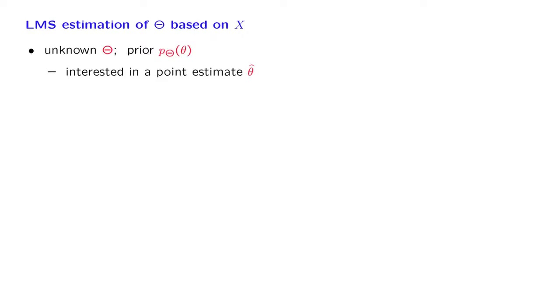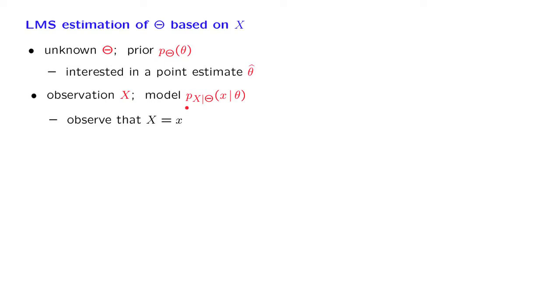After our warm-up, we can now come to the real problem. We have again a random variable theta with a known prior distribution, and we're interested in a point estimate. What will be different this time is that we now have an observation, and we also have a model of that observation as a conditional distribution given the value of the true parameter. We observe a value of that random variable — that value is little x — and on the basis of that value, we would like to come up with a point estimate of the unknown random variable theta.